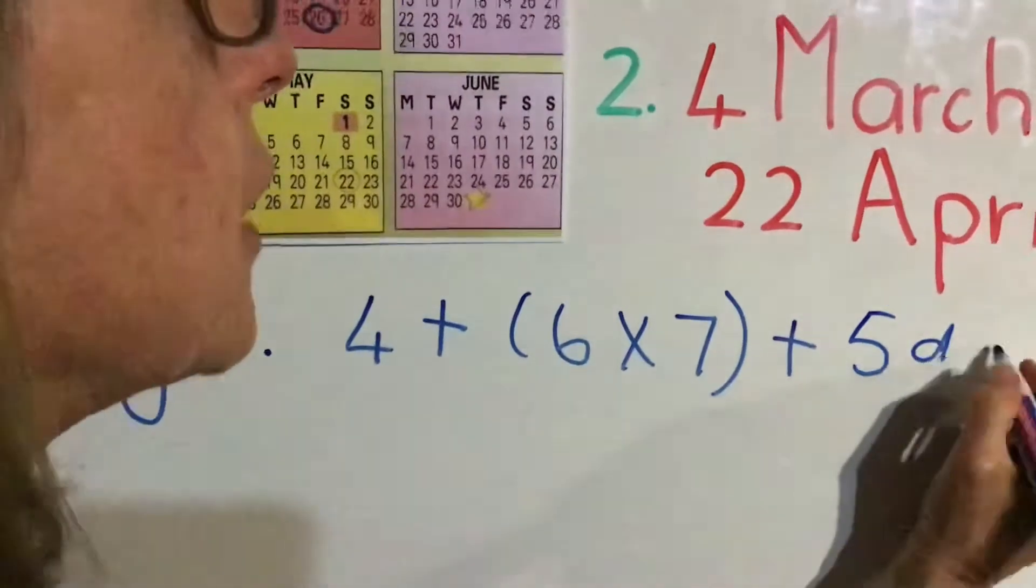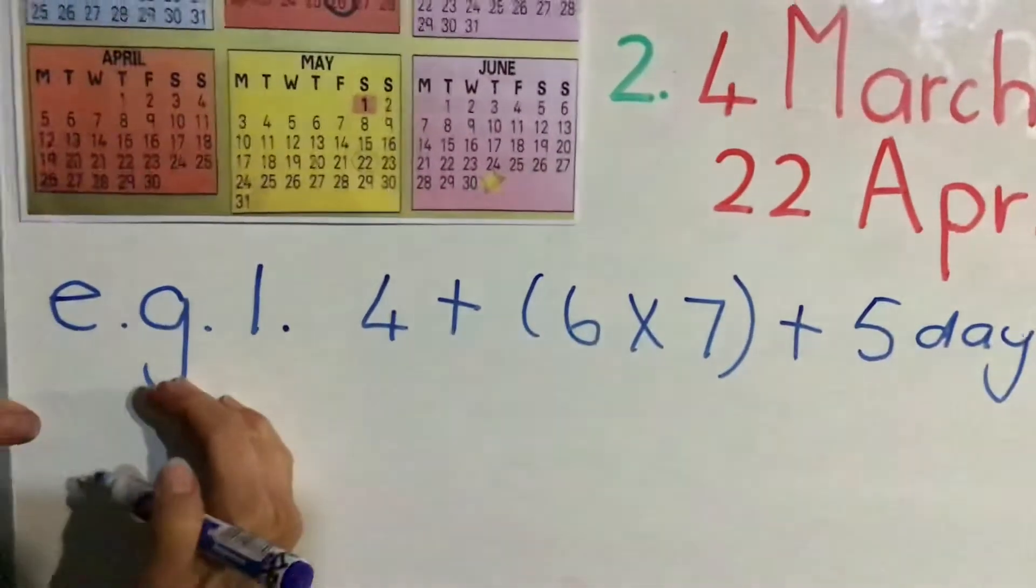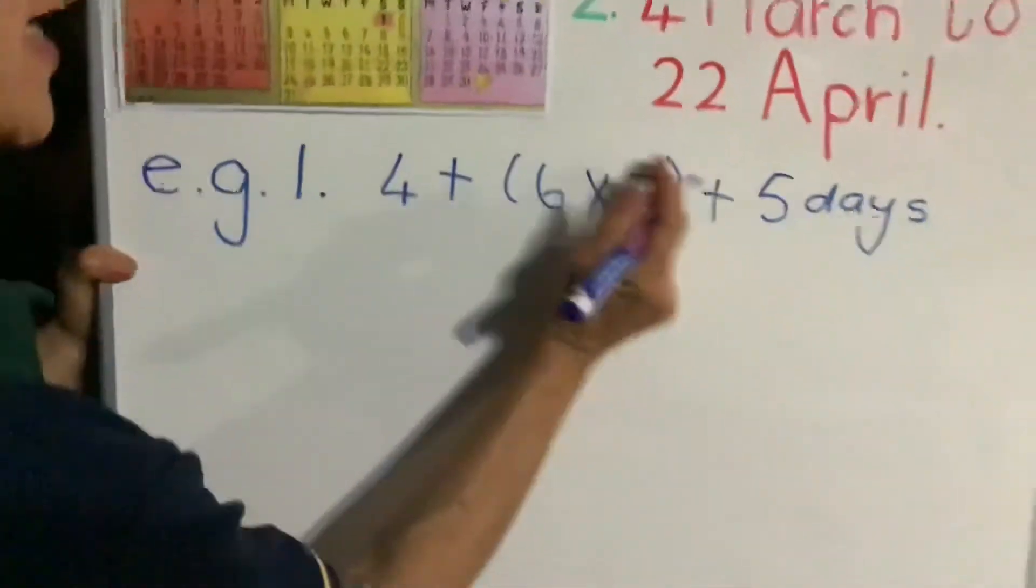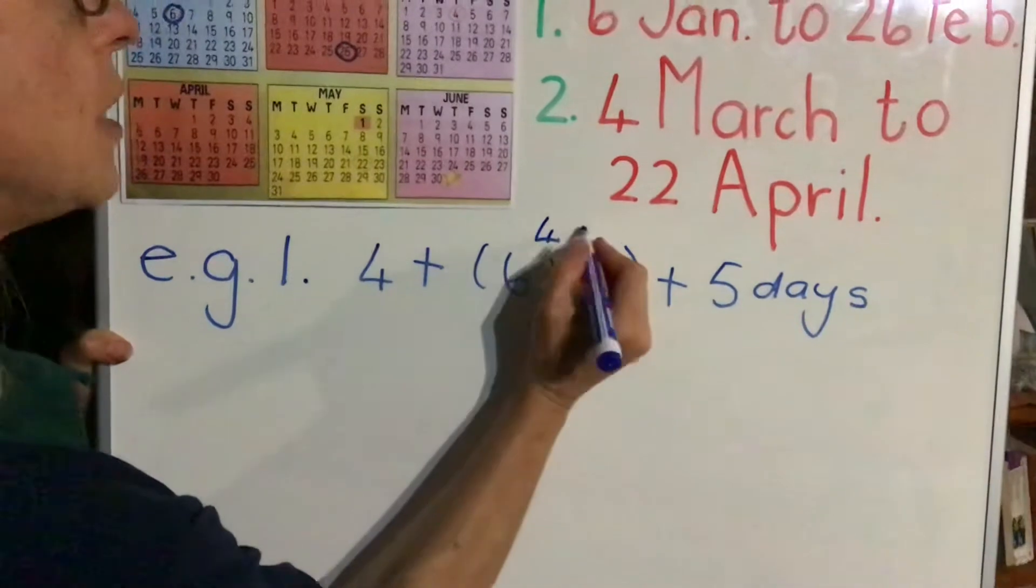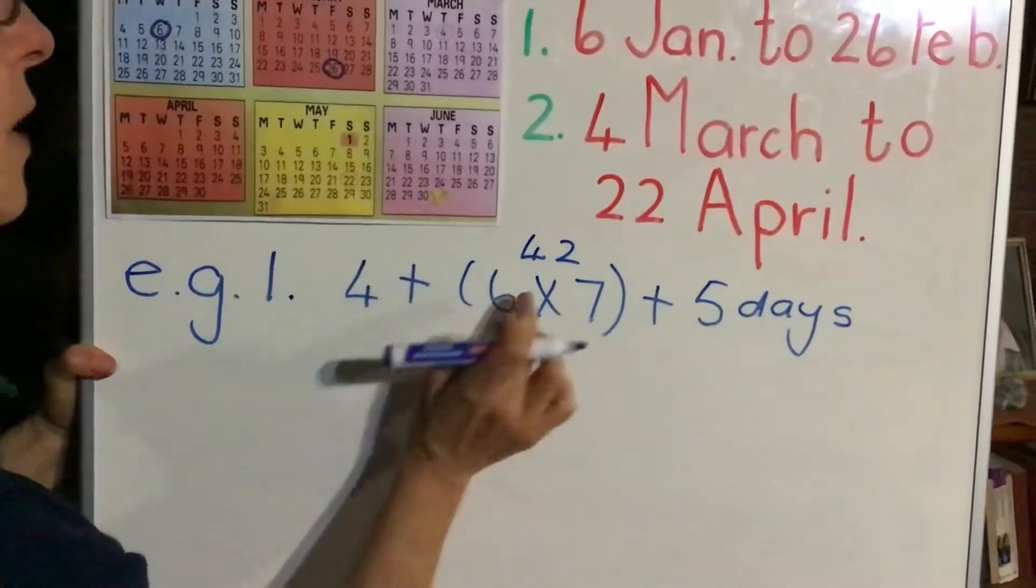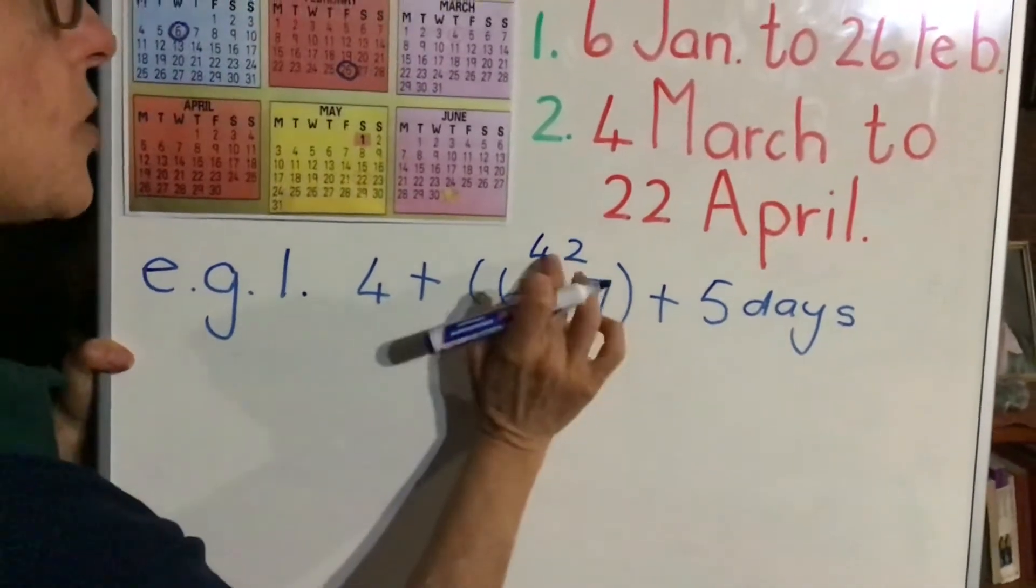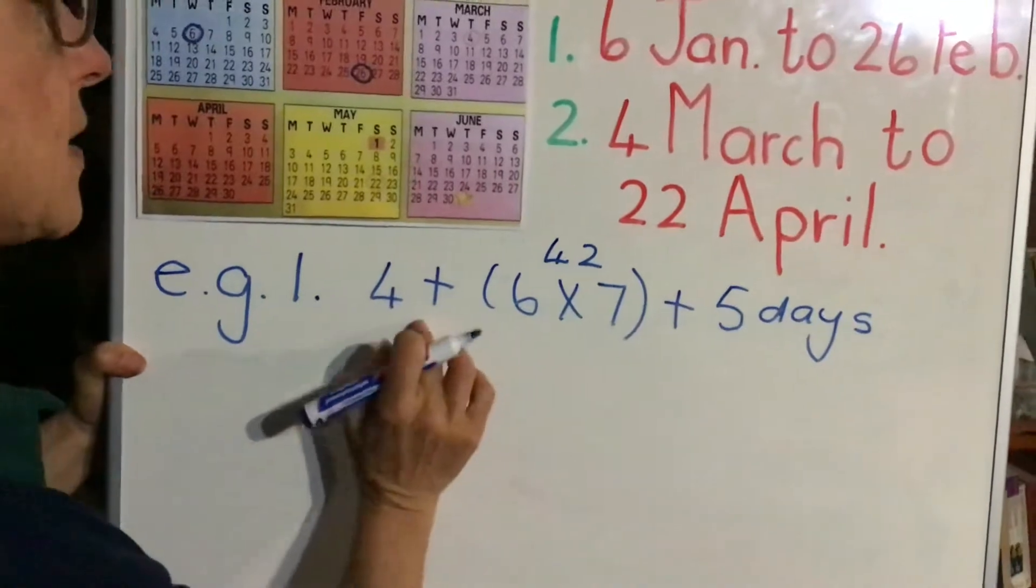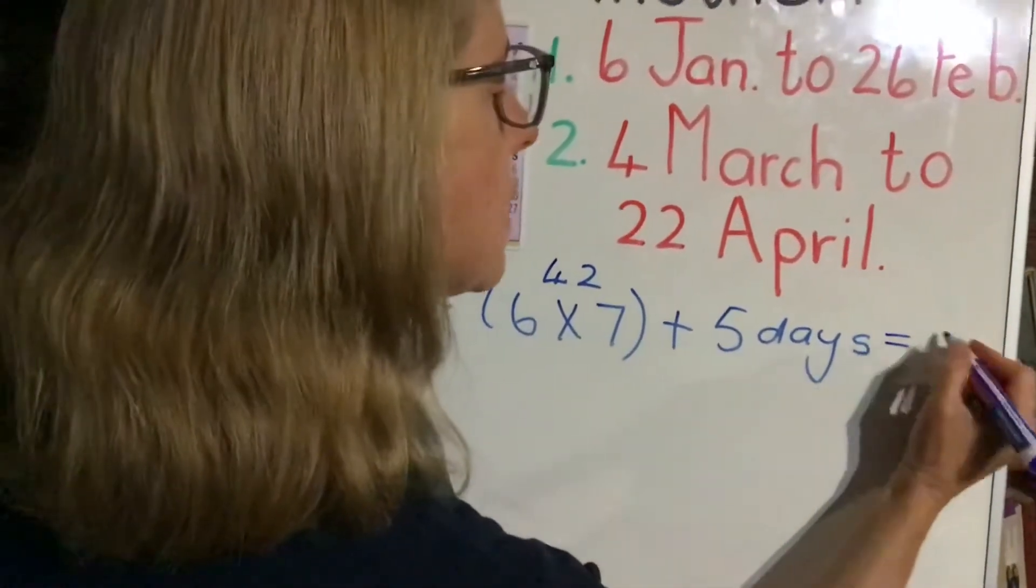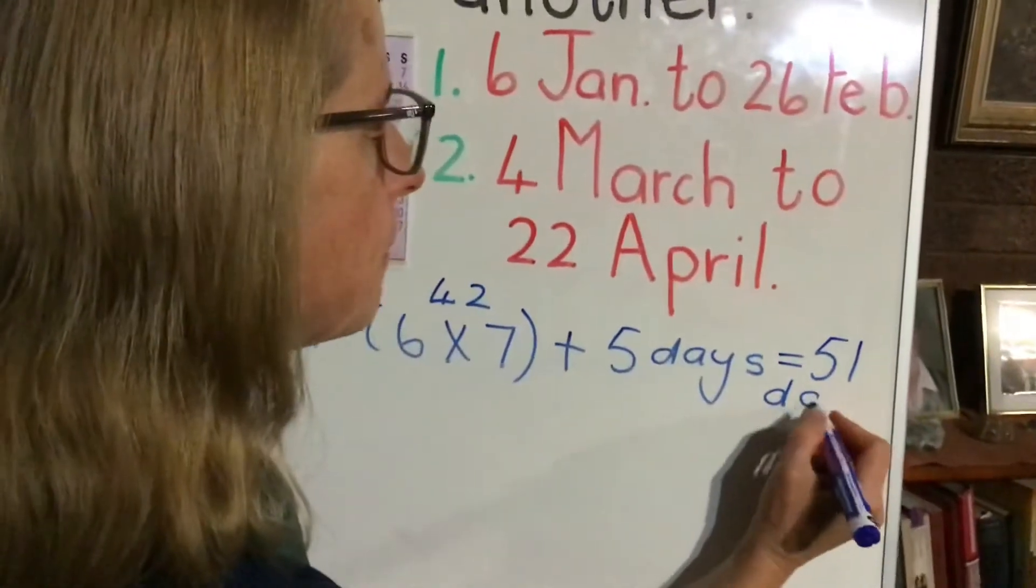Now all that remains is for us to work out this number sentence. Let's work out the brackets first. 7 times 6 is 42. So 4 + (6 × 7) + 5. That's 42 plus 5 is 47, plus 4 is 51. And so that is the first one done. That was very easy, wasn't it?